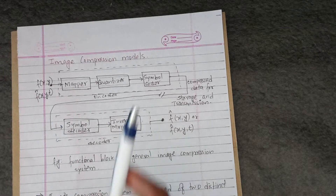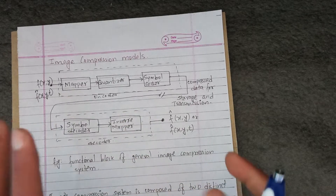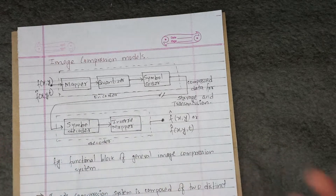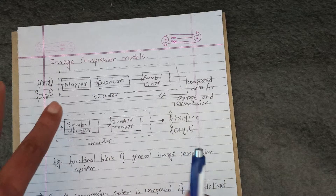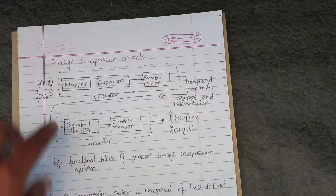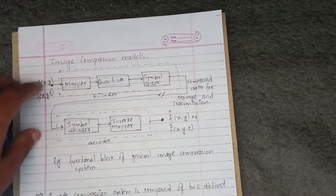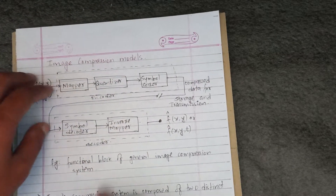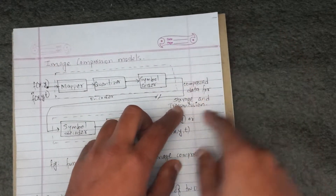Welcome back. What is the image compression model? Image compression model has two components: encoder and decoder. The encoder takes the input image, encodes and compresses the data for transmission.